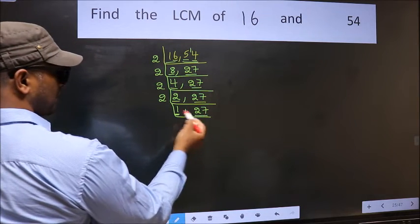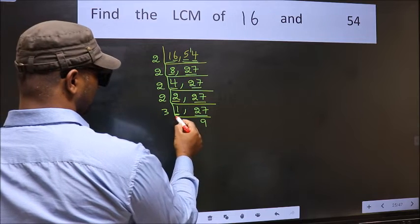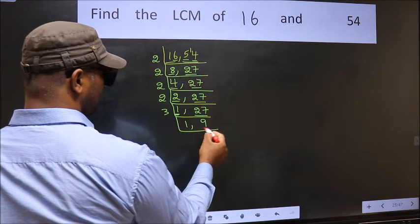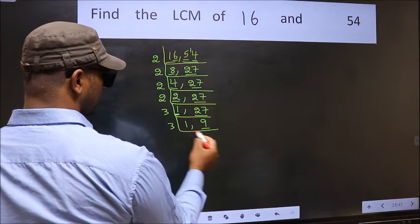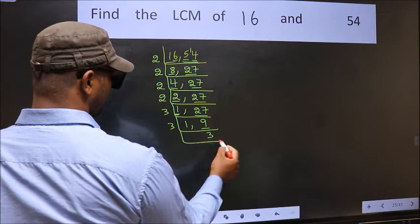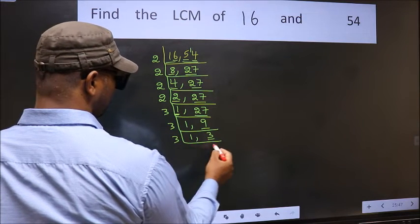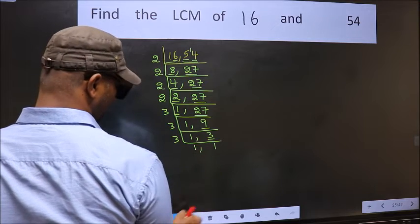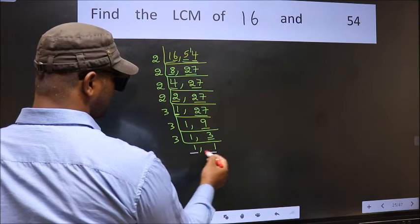Now 27 — 3 times 9 is 27. Now here we have 9 — 3 times 3 is 9. Now we have 3 — 3 is a prime number, so 3 times 1 is 3. So we got 1 in both places.